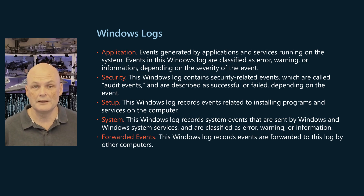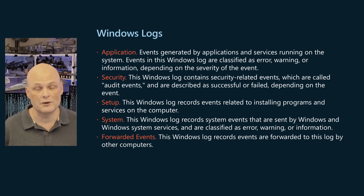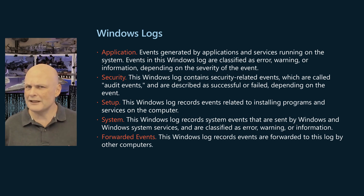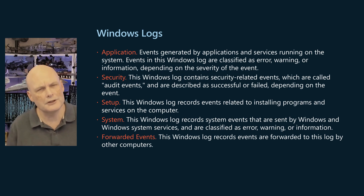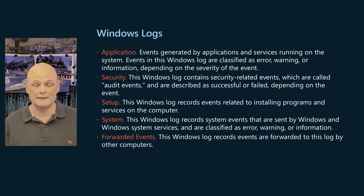The Security Event Log contains security-related events which are called audit events and are described as either a failed audit or a successful audit. For example, a user fails to log onto Windows, or a user is successfully logged onto Windows. We cover auditing in other topics on this channel. The Setup Log records events related to installing programs and services on the Windows Server computer. Computers configured as domain controllers have additional logs displayed in this category.